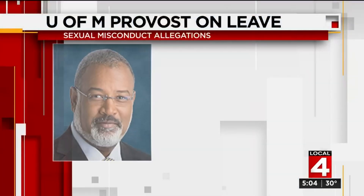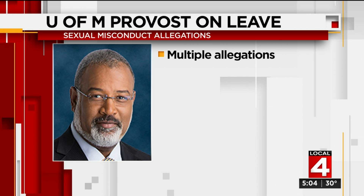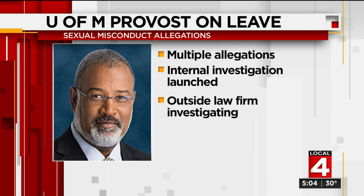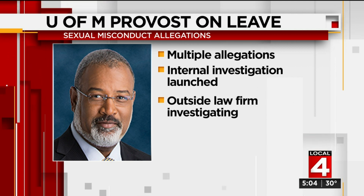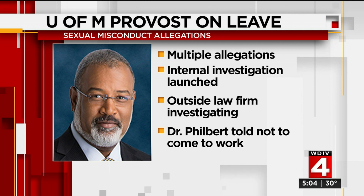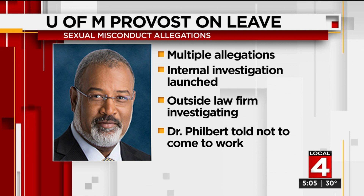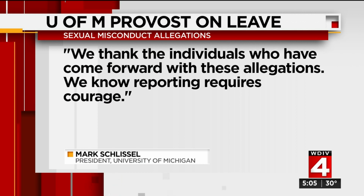Here's what we're gathering at this hour. U of M provost Martin Filbert was placed on leave yesterday. In a letter to students, the university president says the school received several allegations of sexual misconduct naming Dr. Filbert. These reports came in over two days, January 16th and the 17th. An internal investigation was immediately launched, and the university retained an outside law firm to do another independent investigation of what are being called very serious allegations. The Department of Public Safety at U of M was also brought into this, and the school asked Dr. Filbert not to come to work while the allegations were made. One of the many statements from the president of U of M: 'We thank the individuals who have come forward with these allegations. We know reporting requires courage.' That's from Mark Schlissel, the president of U of M.